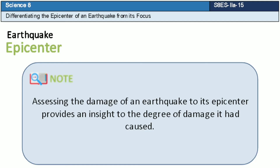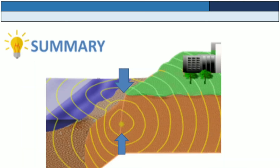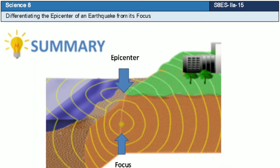Note: assessing the damage of an earthquake at its epicenter provides an insight into the degree of damage it had caused. In summary, the focus is the origin of the seismic waves and responsible for the occurrence of the earthquake, while the epicenter is the visible origin of the earthquake.